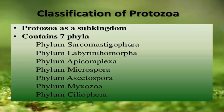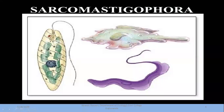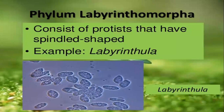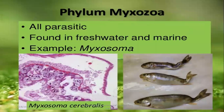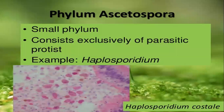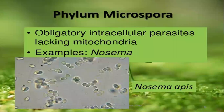There are seven total phyla discussed here. The first phylum is Sarcomastigophora, which includes pseudopodia or flagella users. We have discussed Labyrinthiomorpha, which includes Labyrinthula. Phylum Myxozoa causes diseases in fishes. Acetospora is also a small phylum and includes Haplosporidium. Microspora are obligate intracellular parasites. Nosema apis causes disease in honeybees.